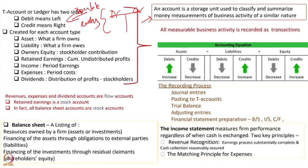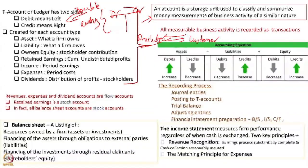All measurable business activity is recorded as transactions. For example, if the company effects the sale of its product, sales to a customer is an activity — recorded as a transaction. In this transaction, two things happen: products move from the company to the customer, and the customer pays cash for it. The movement of the product of a certain value to the customer is recorded in value terms, and the movement of cash goes to the company. This exchange of value is noted as an income transaction.